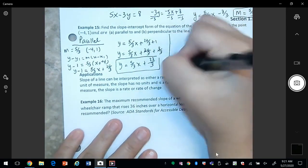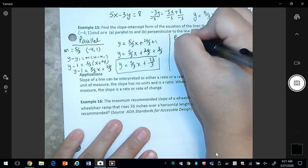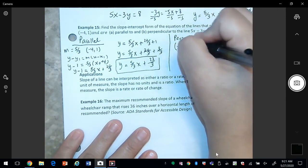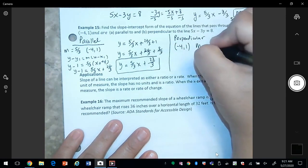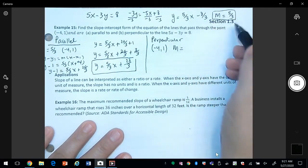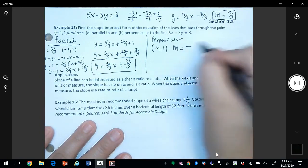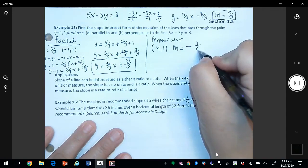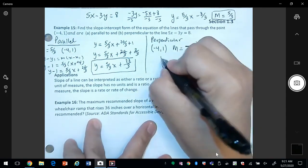For parallel. So for perpendicular, we still use the same point, and now the slope, since it's perpendicular, we're going to get the negative reciprocal of this, which means the opposite sign. So if this is positive, we're going to end up with a negative, and then get the reciprocal, which means to flip the fraction. And then we start the process again.